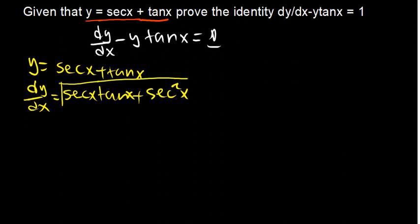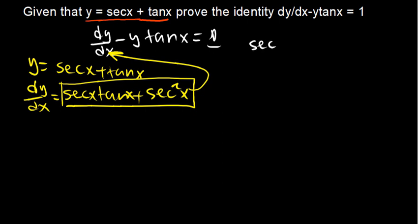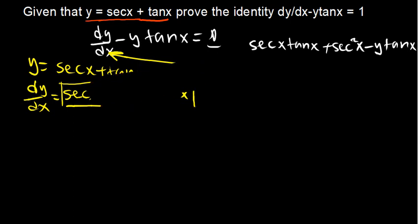This is the derivative of the function. Now I'm going to substitute: where there is dy/dx I put sec x times tan x plus sec squared x, and where there is y I put the y value, then I have tan x outside. The whole expression is supposed to give us 1.